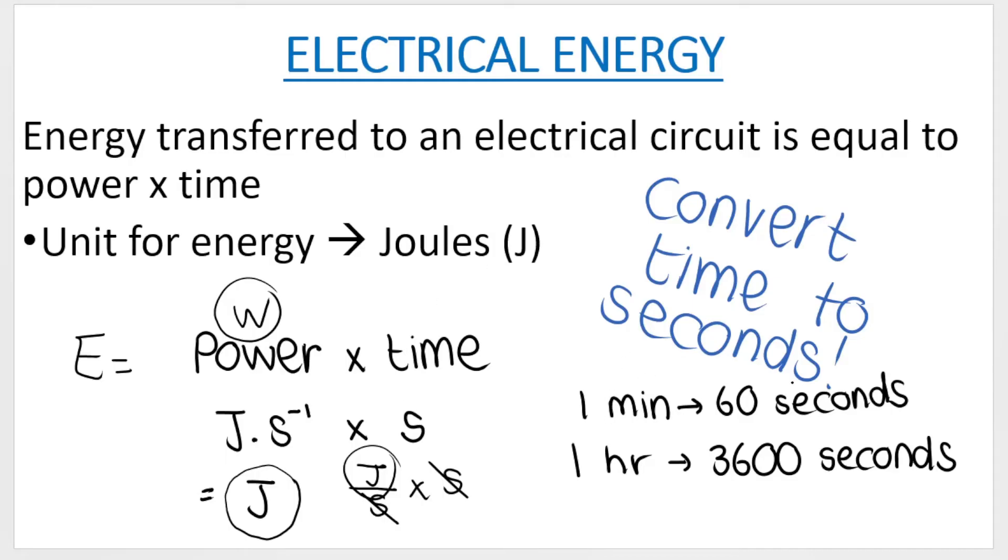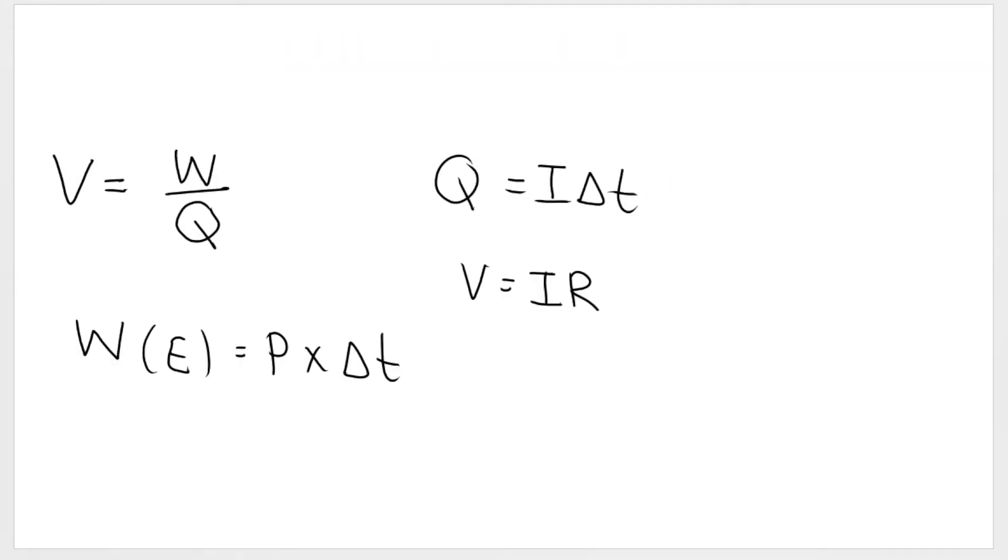To go from minutes to seconds you times by 60. To go from hours to seconds you times by 3,600. It's basically to get from hours to minutes you times by 60 because there's 60 minutes in one hour. And to get from minutes to seconds you times by another 60 because there's 60 seconds in a minute. So times 60 times 60, that's where the 3,600 comes from. It's very important to convert to seconds.